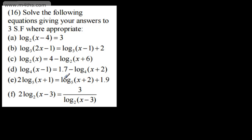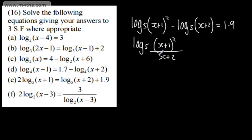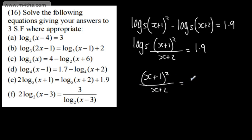This next one has something extra to consider — we need to get all logs on the left-hand side with base 5. First, I'm going to rewrite by bringing the power up: 2 log to the base 5 of (x plus 1) becomes log to the base 5 of (x plus 1) all squared, using the power law. Then minus log to the base 5 of (x plus 2) equals 1.9. Combining as a difference of logs, we get log to the base 5 of [(x plus 1)² over (x plus 2)] equals 1.9.